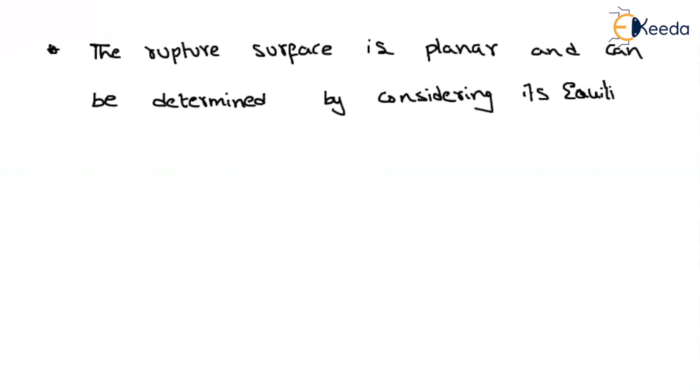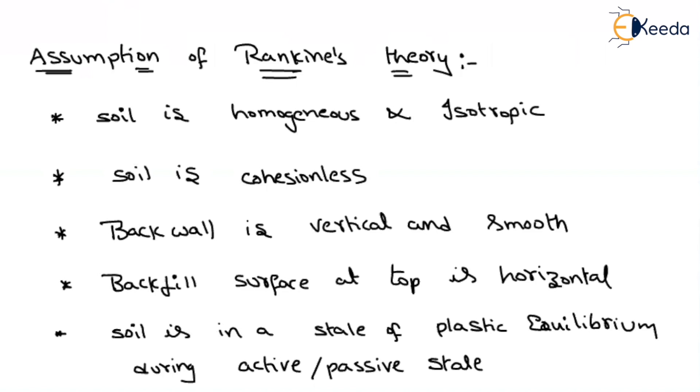All these points are very important. They will ask you in one mark questions, you have to remember the assumptions. First one is that homogeneous and isotropic. By assuming that assumption, we can say that properties of the soil are same in all directions at any point. And it is applicable, whatever the formula we are going to derive, that is only applicable for cohesionless soils. And he is assuming that your back wall is vertical and smooth, and whatever the backfill, that is horizontal.